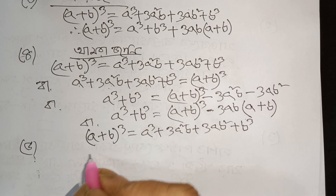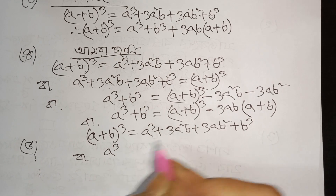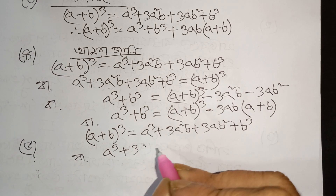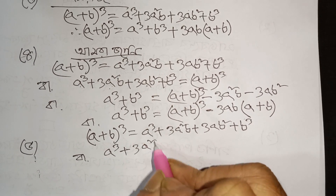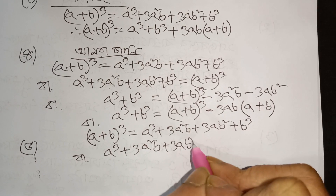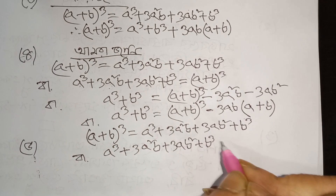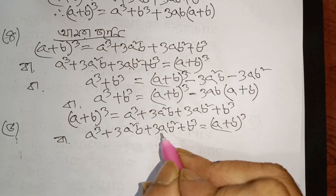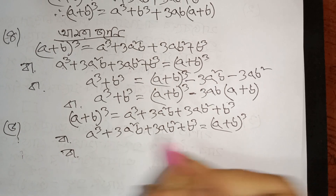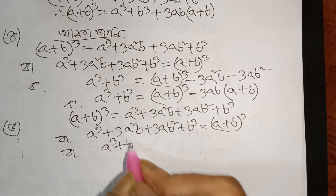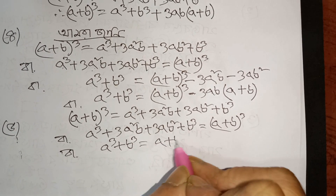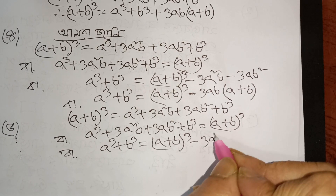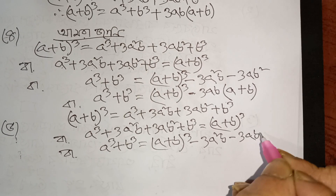This is a cube plus 3a square b plus 3a b square plus b cube. So this is the same thing — I am going to transfer it to the cube side. I am going to add a cube plus 3a square b plus 3a b square plus b cube, and I am going to add a cube. So a cube plus b cube minus a cube plus b cube minus 3a square b minus 3a b square.